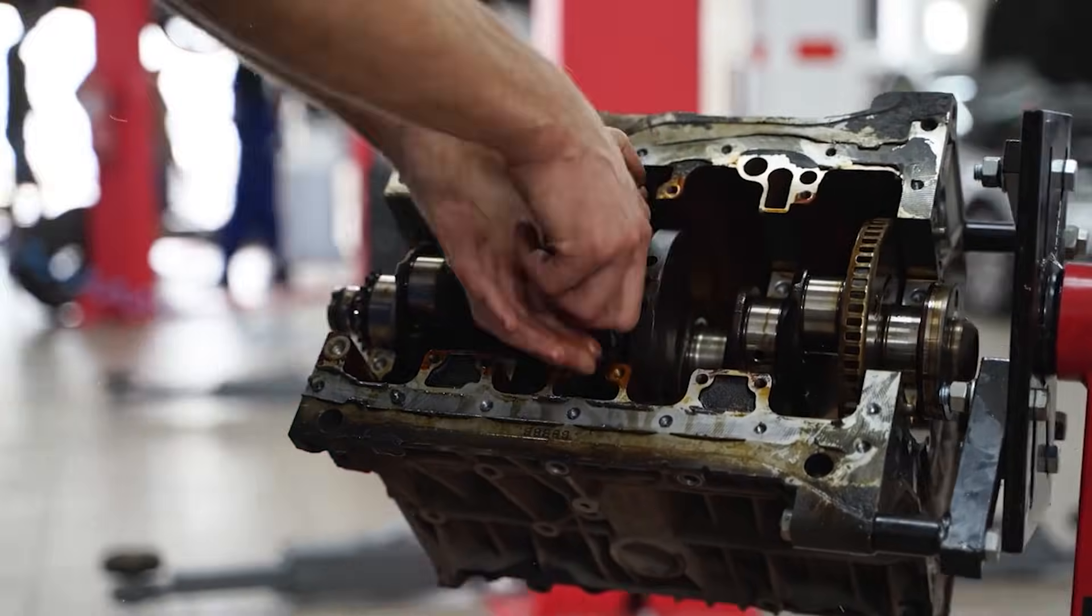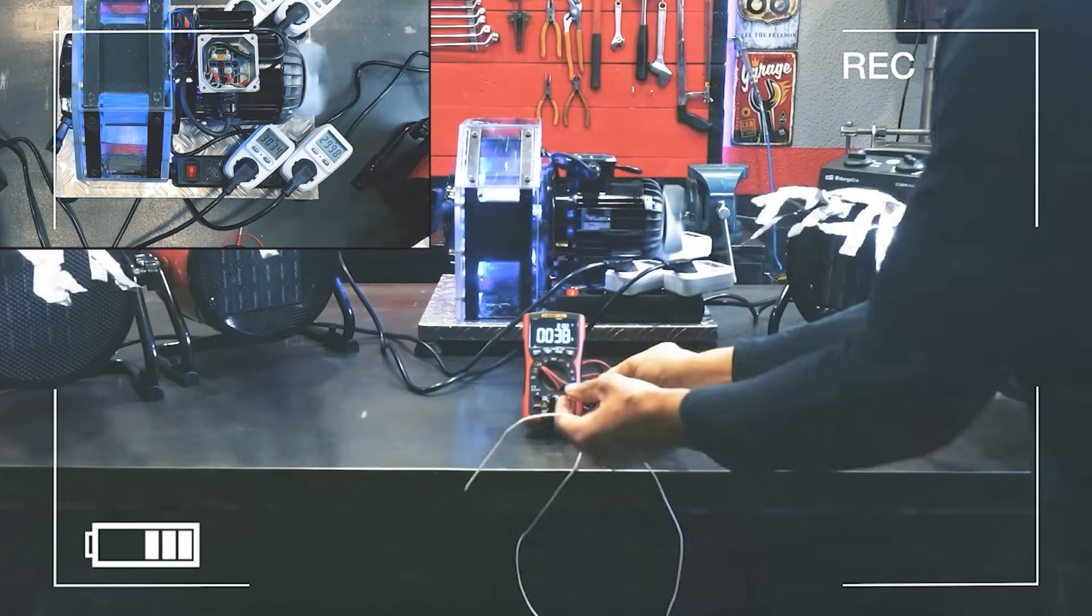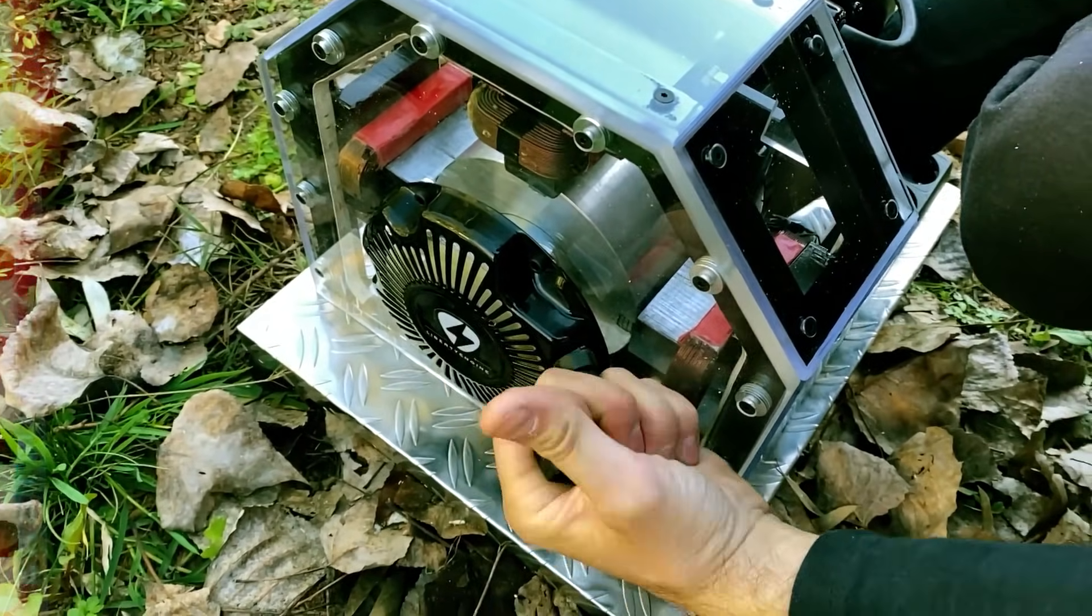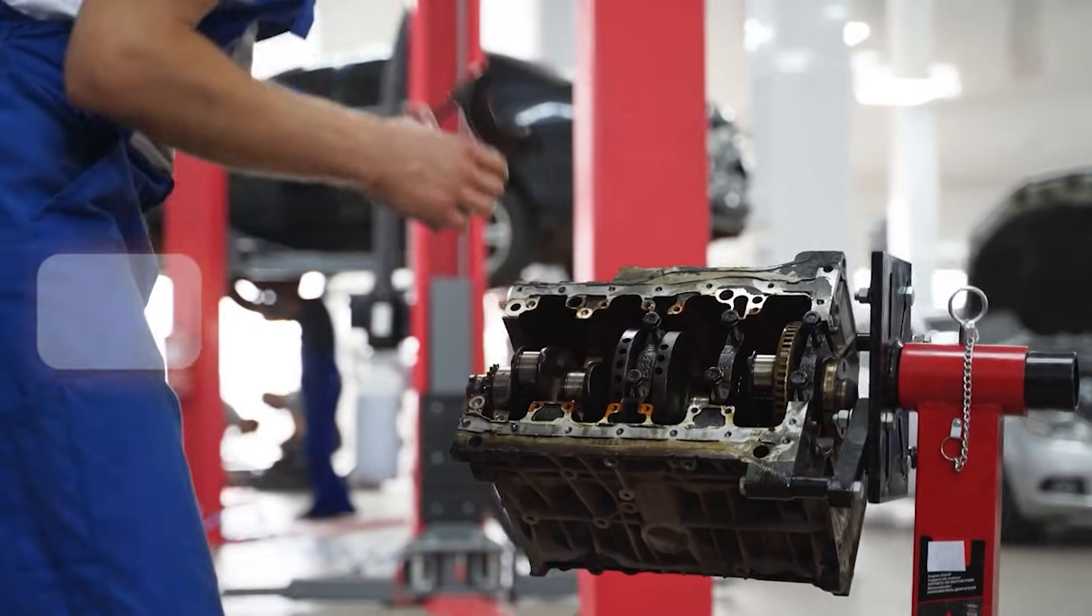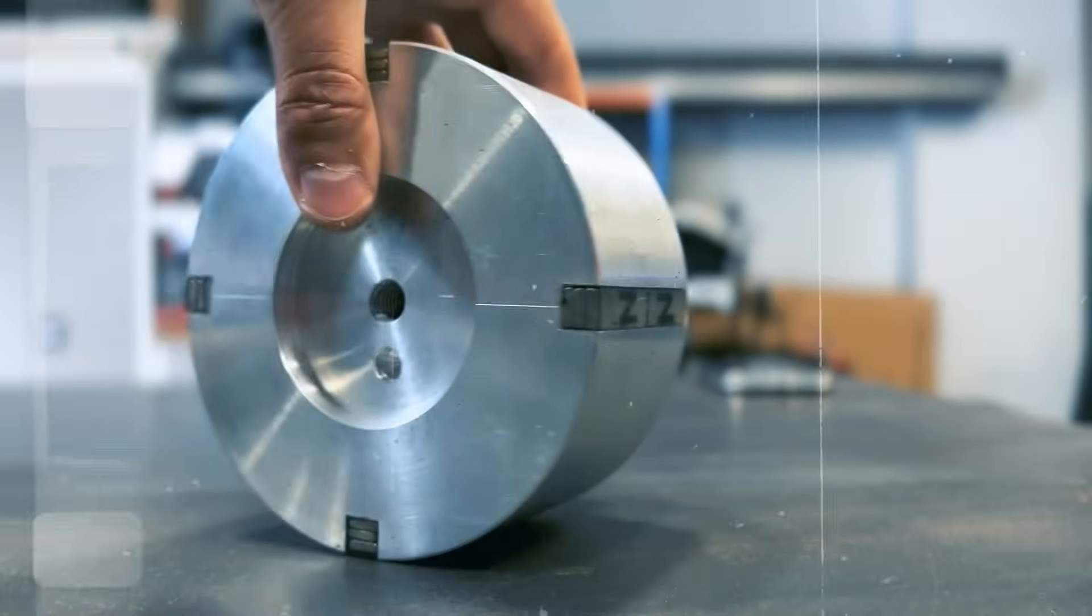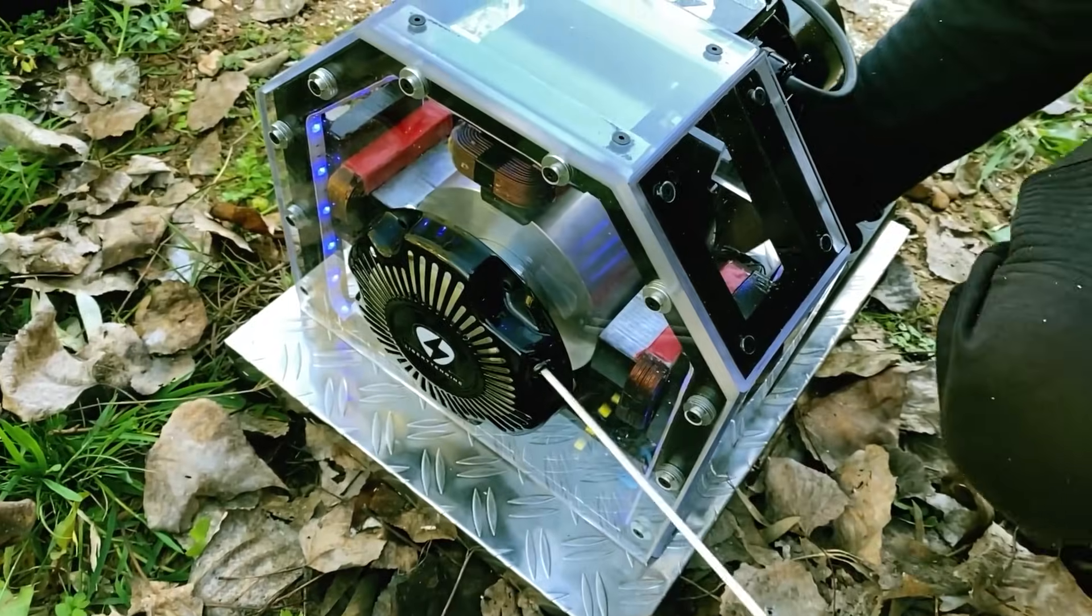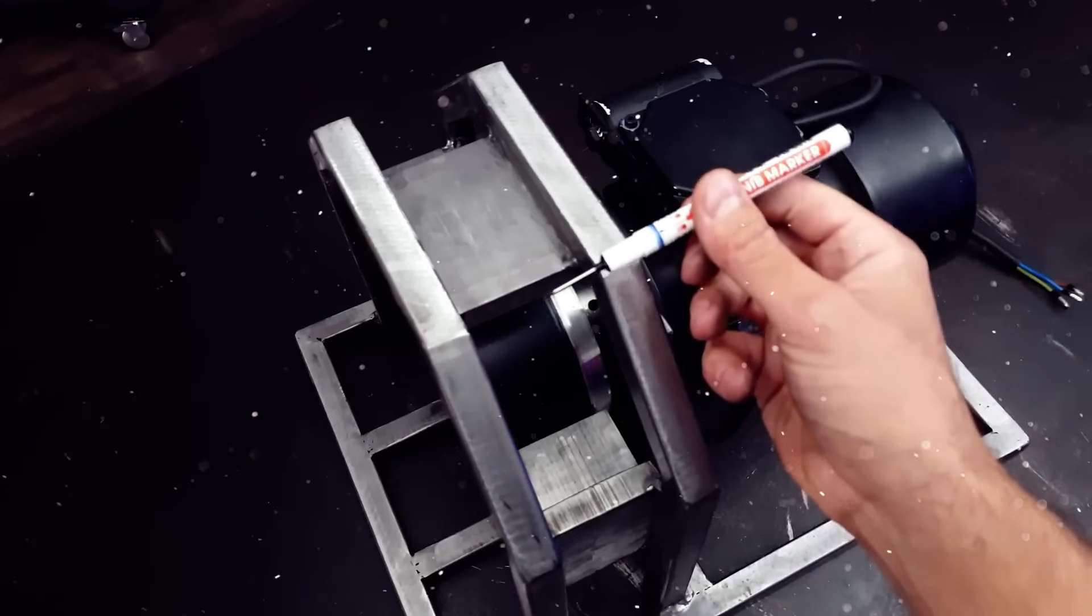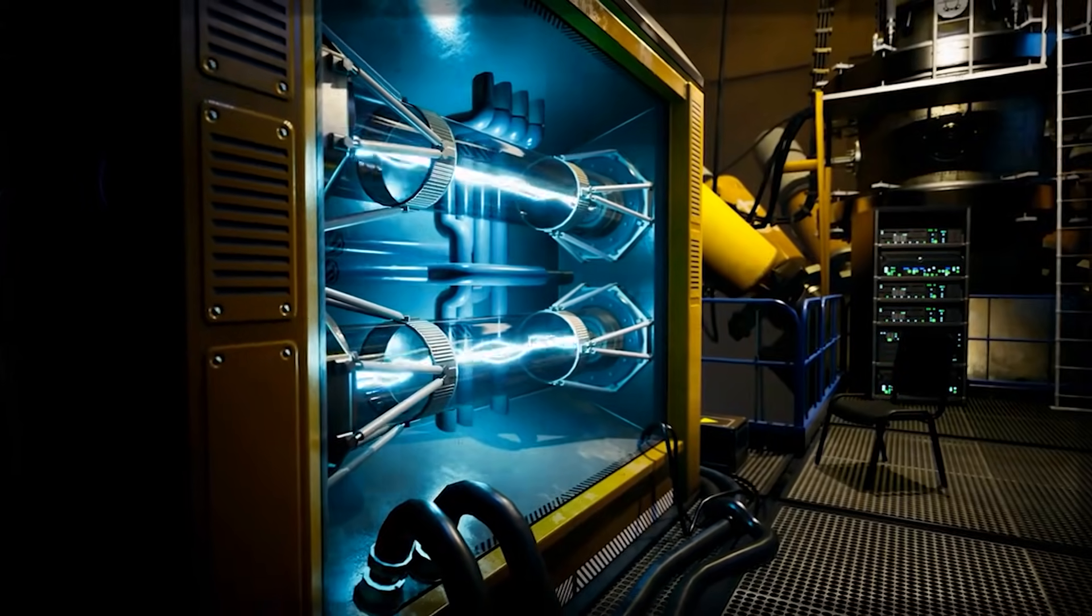Bearings create drag, belts slip, and air turns into a brake at higher speeds. The load and braking action are usually increased. This is why a motor generator loop is normally a trap. The motor does not get free energy from the generator. It only gets a portion of the mechanical work you already put in, minus losses. So the loop decays. That is the baseline expectation, and you should keep it in your head while watching the meters. If the Liberty engine appears to run indefinitely while powering something measurable, then either the measurements are wrong, there is an unseen energy input, or there is a physical effect at work that the simple model did not include. Those are the only honest options. The rest is storytelling.